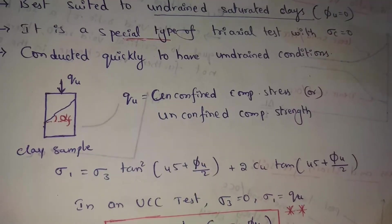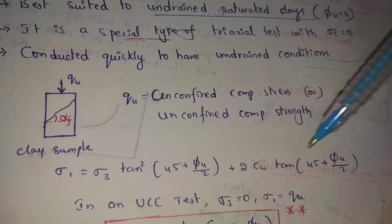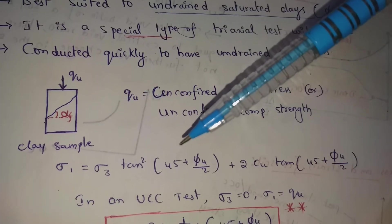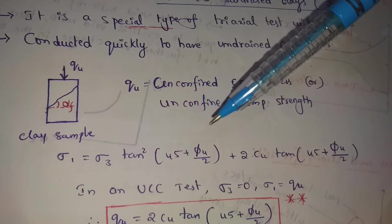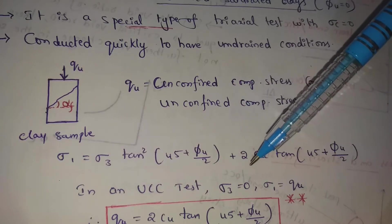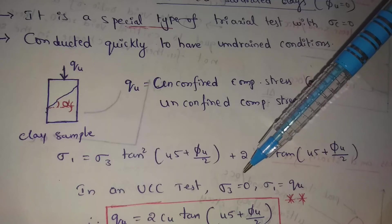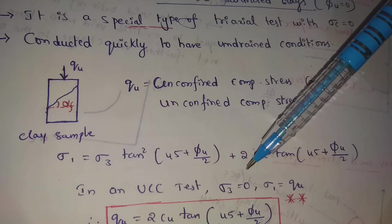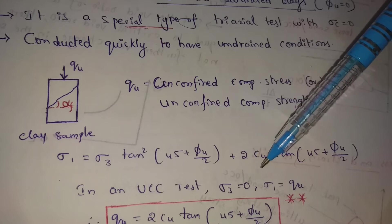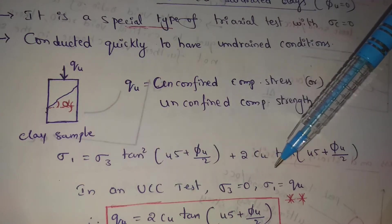Here, σ3 (the minor principal stress) is equal to 0 in this UCC test, since σc equals 0. The major principal stress σ1 is equal to qu, the unconfined compression stress.